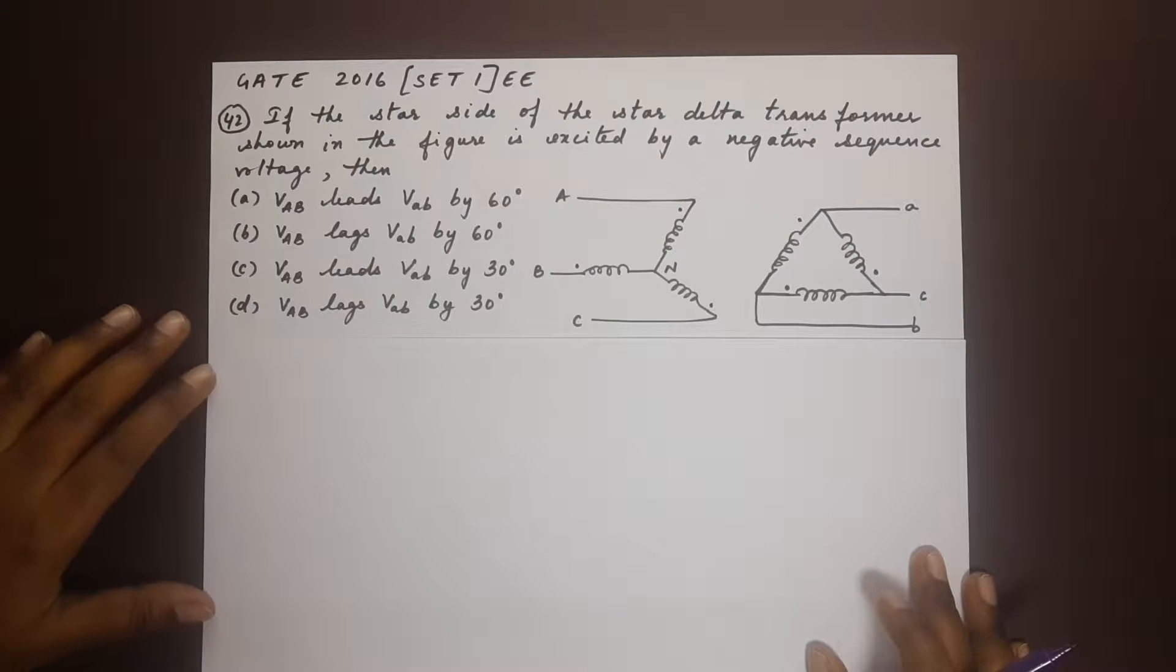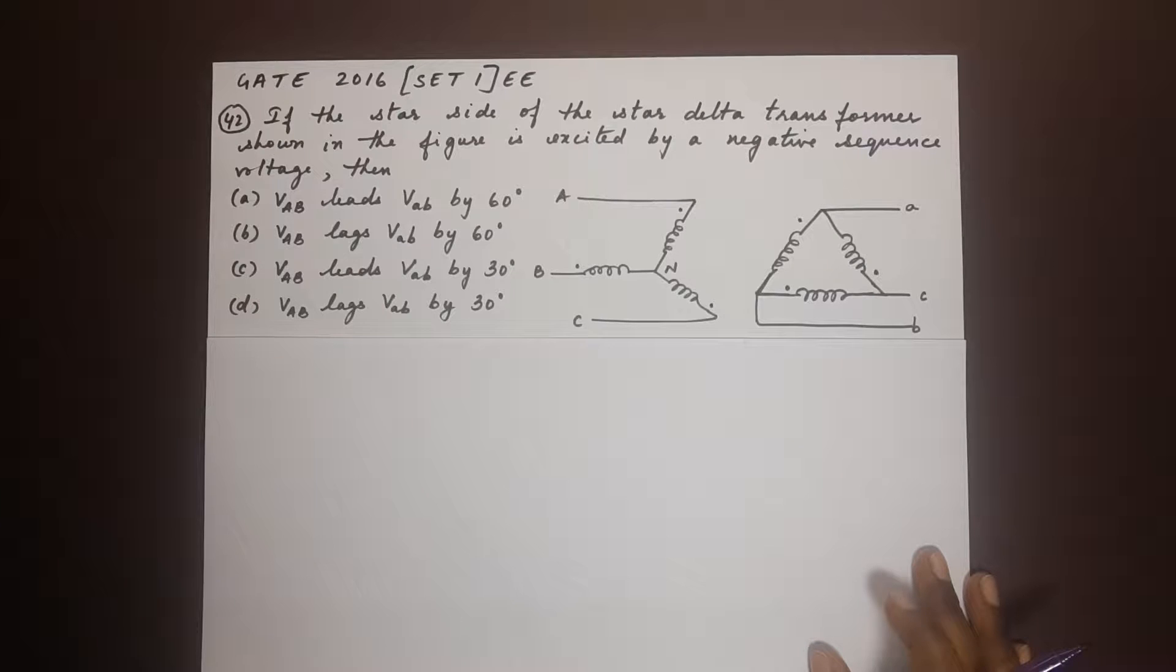Here's the next question, number 42. If the star side of the star delta transformer shown in the figure is excited by a negative sequence voltage, then. So we have four options here.